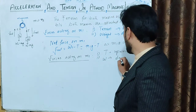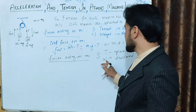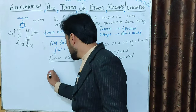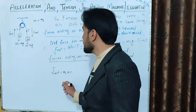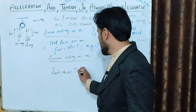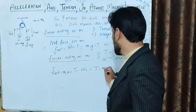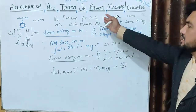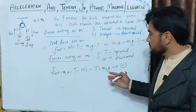For m2, the motion is upward. The net force acting upward is tension T minus weight W2. Applying Newton's second law: F_net on m2 = T - W2 = m2 × a, which gives T - m2g = m2a. This is Equation 2. The tension T can be expressed as T = m2a + m2g. This is Equation 4.